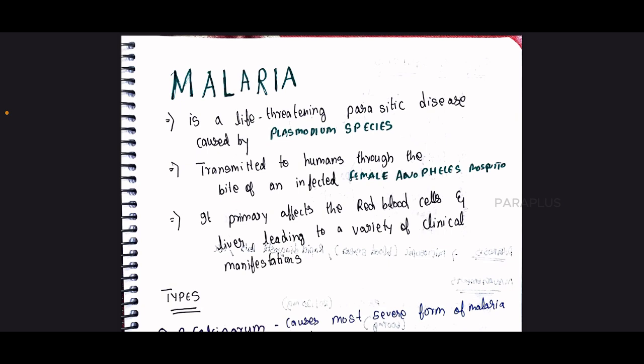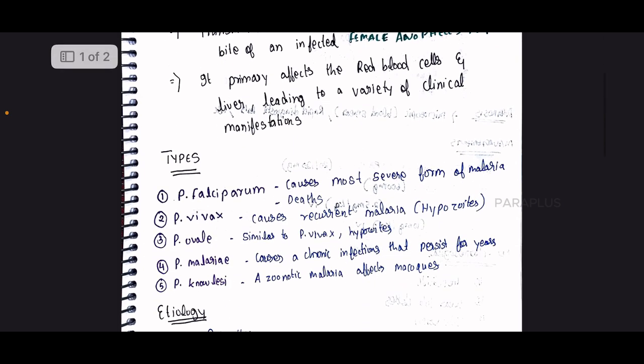Malaria primarily affects the red blood cells and liver, leading to a variety of clinical manifestations. Now let's talk about types — Plasmodium falciparum causes the most severe form of malaria.